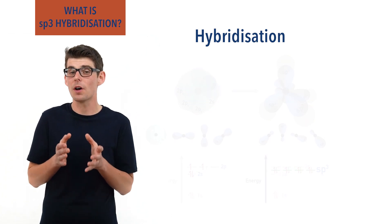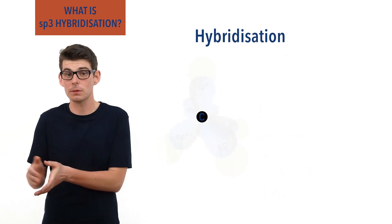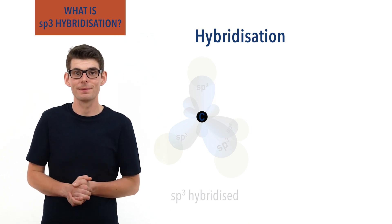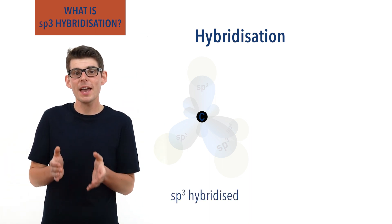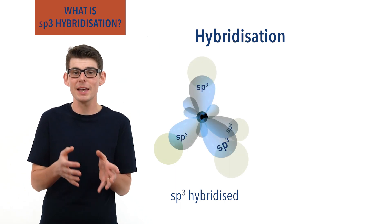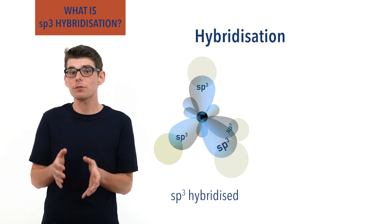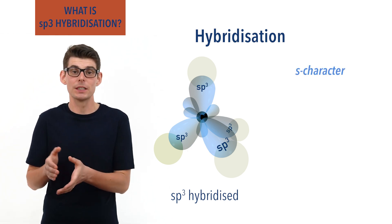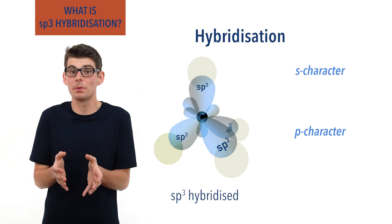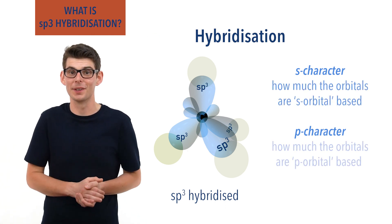Carbon atoms that have hybridized in this way, when bonding with other atoms, are referred to as sp3 hybridized. The sp3 orbital shapes are a kind of mashup of an s orbital and a p orbital, and they are described as having s character and p character — basically how much the orbital shapes are s orbital-like and how much they are p orbital-like.